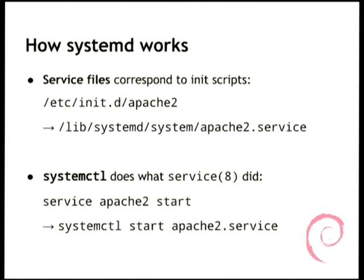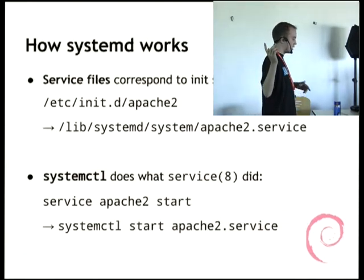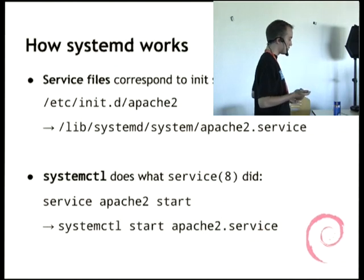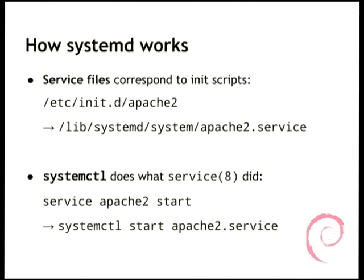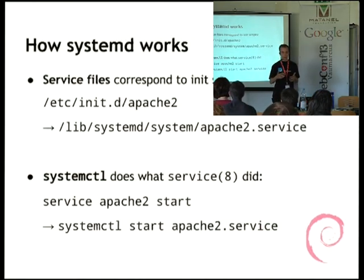So how does systemd work? Where we previously had init scripts, we now have service files. Service files are a special kind of unit files — the more generic term is unit files, and what corresponds to an init script is a service file. So previously you would have /etc/init.d/apache2 as an init script, and the corresponding file would be /lib/systemd/system/apache2.service. What's important is that the base name, apart from the .service suffix, needs to be the same, because systemd when booting will look at all services in /etc/init.d and use them, but if a service file is also present, that will take precedence.